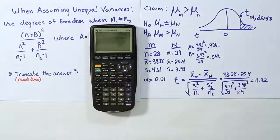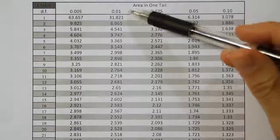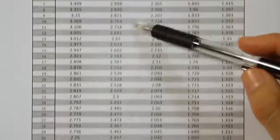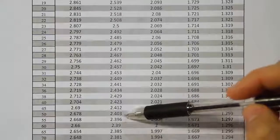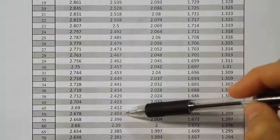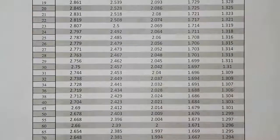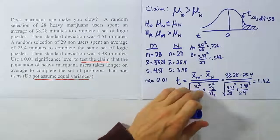Now let's go to our t-table and find the critical value with alpha = 0.01 and 53 degrees of freedom. That falls between 50 and 55 degrees of freedom. Since the larger critical value is more conservative, we choose that value: 2.403. Our critical value is 2.403.